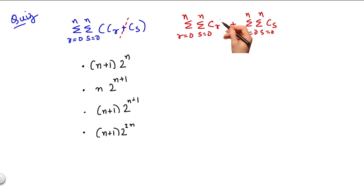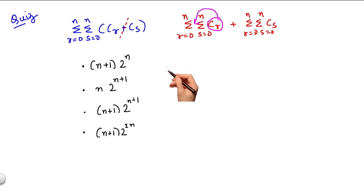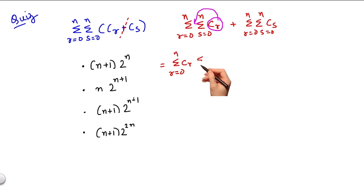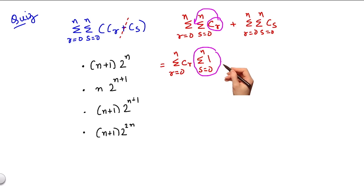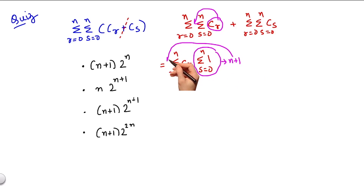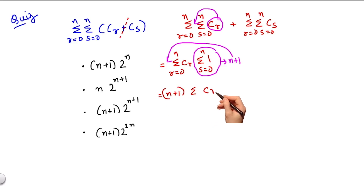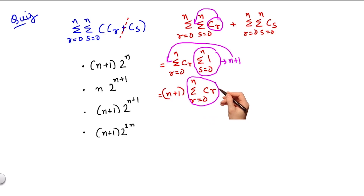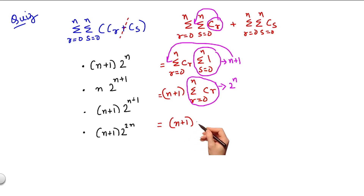Let's solve the first double summation first. Since Cr is independent of s, I can take it outside the summation sign to get summation Cr, r from 0 to n, times summation 1, s from 0 to n. This equals n plus 1, and since it is independent of r, I can take it outside as well to get (n+1) times summation Cr, r from 0 to n. This sum, as we all know, is 2 to the power n. So the first summation becomes (n+1) times 2 to the power n.